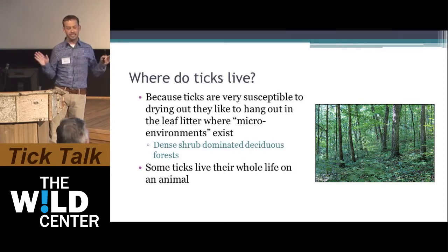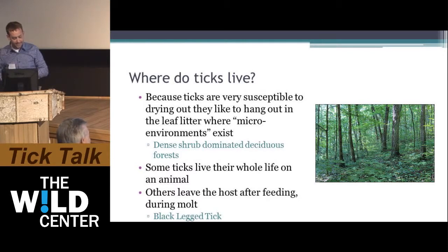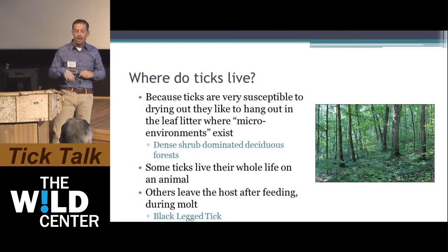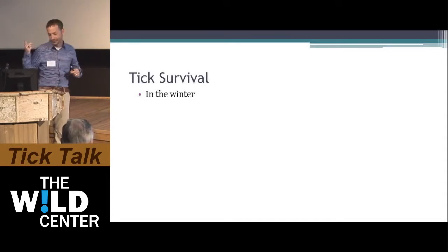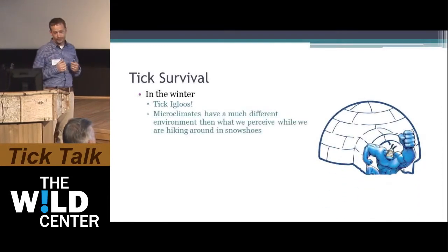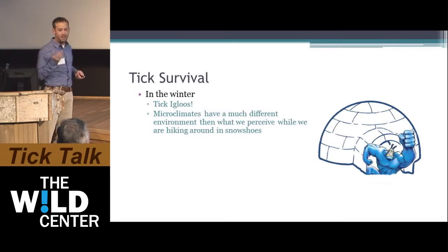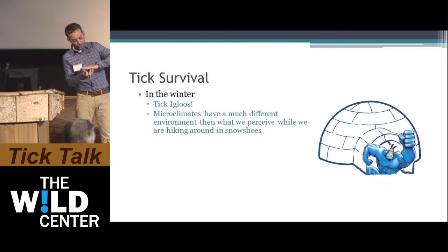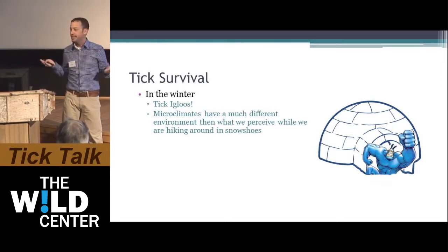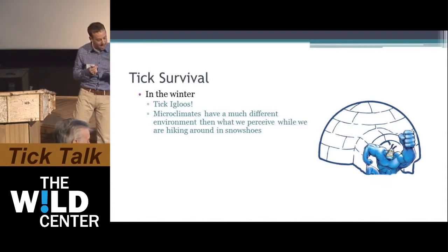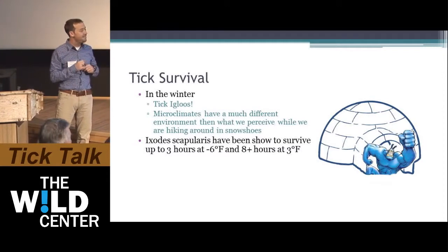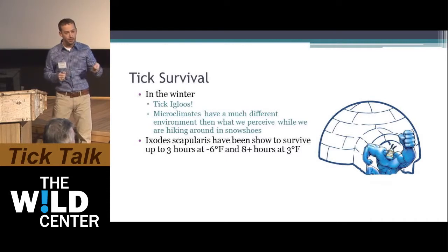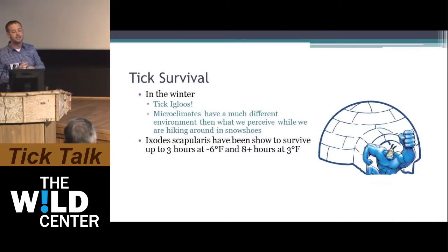Some ticks live their whole life on the animal and never leave, but not the black-legged tick — it lives very little time on the animal and spends most of its life in nature, making the microenvironment critical for survival. Regarding winter survival, ticks live in the leaf litter almost like an igloo: a layer of organic material and ice or snow creates a protected microclimate. Experimentally, Ixodes scapularis has been shown to survive up to three hours exposed to minus six degrees Fahrenheit, and eight hours at three degrees Fahrenheit — but those aren't the warmer temperatures they experience in their microclimate.